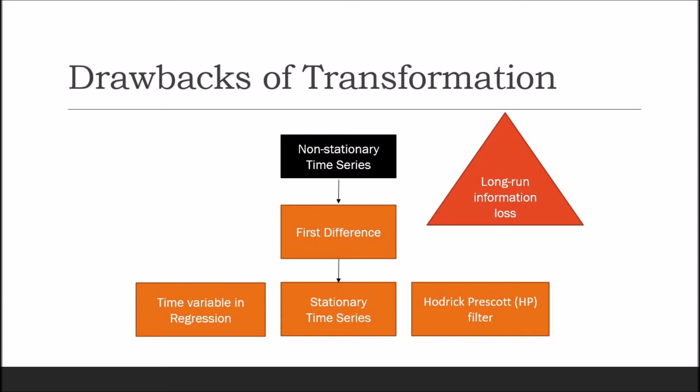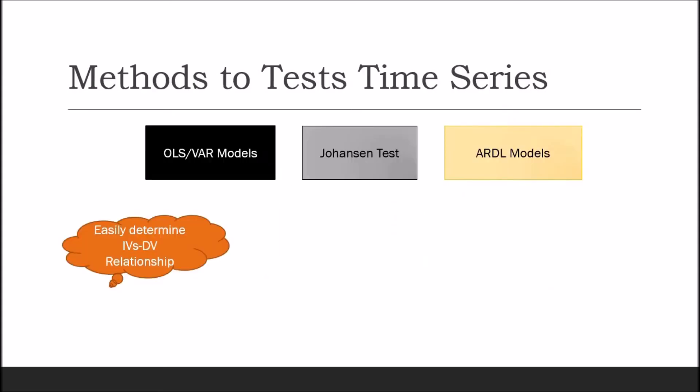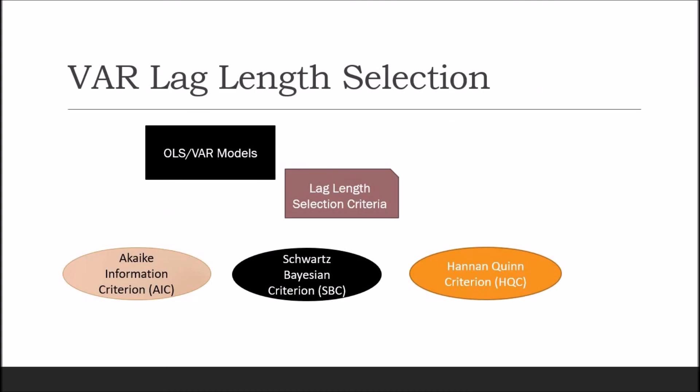If all variables are stationary, you can easily estimate the relationship between independent and dependent variables using OLS or VAR models. Keep in mind that choosing the appropriate lag length is important in VAR modeling. The optimal number of lags can be selected using available lag length selection criteria. The most popular are the Akaike Information Criterion AIC, the Schwarz-Bayesian Criterion SBC, and the Hannan-Quinn Criterion HQC.